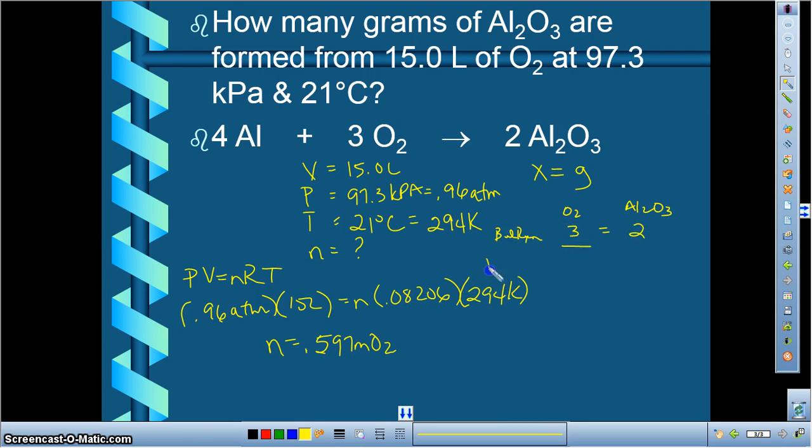What we have from the problem is 0.597, and we want to know the number of moles here. So we're going to cross multiply and solve for X. So X ends up being 0.398 moles of Al2O3.